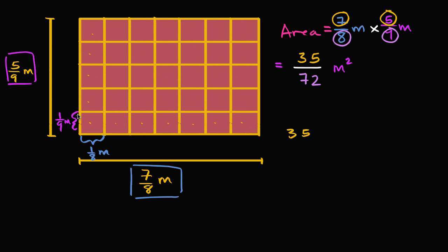So what's the area of just this character right over here? Well, it's going to be 1 ninth of a meter times 1 eighth of a meter. So this area right over there is just going to be 1 ninth of a meter times 1 eighth of a meter, which is equal to 1 times 1 is 1, 9 times 8 is 72, and meters times meters is square meters. So the area of each of these 35 is 1 72nd of a square meter.